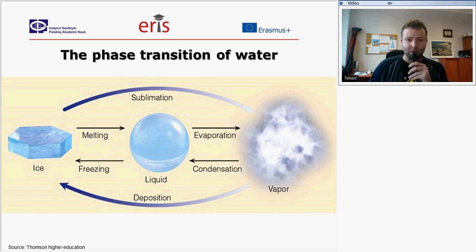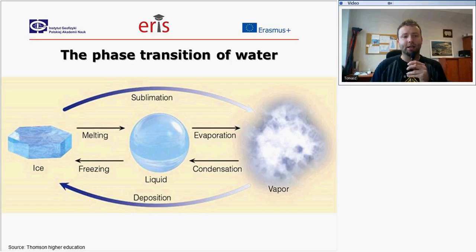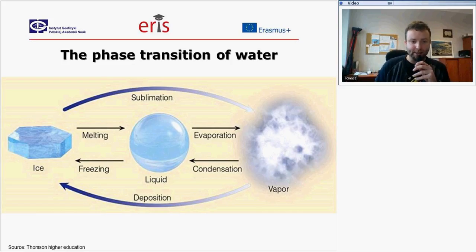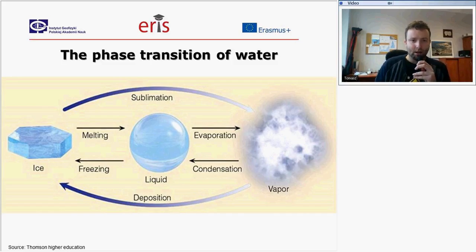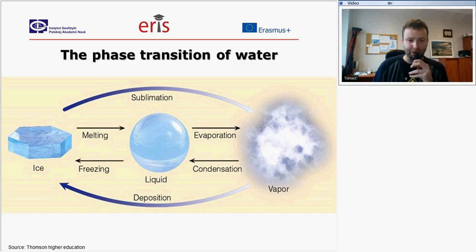Let's look at the phase transition of water. In nature, water can be seen in different states. It can be in solid state as ice, in liquid state as a fluid, and also as water vapor in the gas state. There is a transition between those states due to air temperature.